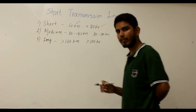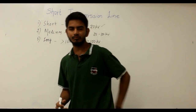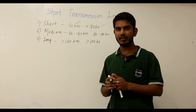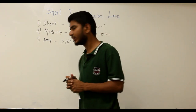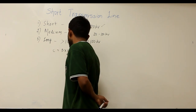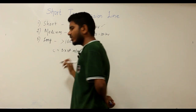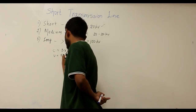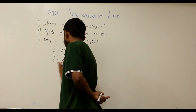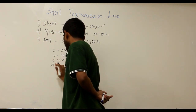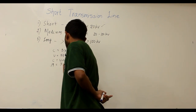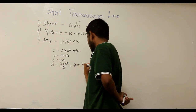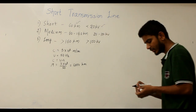Now if we consider the wavelength of the power being transmitted — electrical power is transmitted at the speed of light, which is c = 3 × 10⁸ meters per second. With a frequency of 50 Hz, applying the formula c = f·λ, we get λ = 3 × 10⁸ / 50, which gives 6000 kilometers.